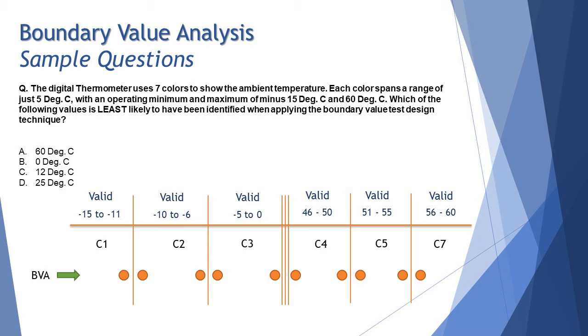So the right answer here is of course 12 degrees Celsius which is not a boundary value analysis but 60, 0 and 25 are extremely on either left or the right boundary of each range. So that's how you go for the right answer here.